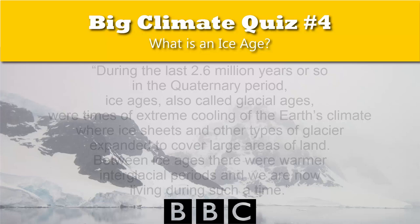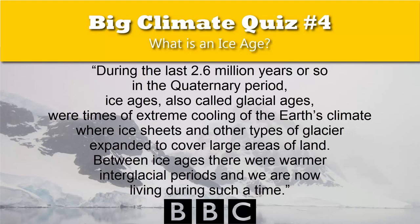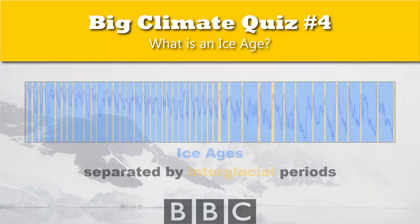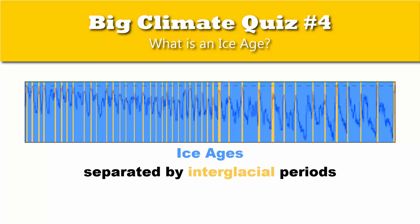The BBC says: "During the last 2.6 million years or so, in the Quaternary Period, ice ages — also called glacial ages — were times of extreme cooling of the Earth's climate, where ice sheets and other types of glacier expanded to cover large areas of land. Between ice ages, there were warmer interglacial periods, and we are now living during such a time." This reinforces the picture given us by the American Museum of Natural History.